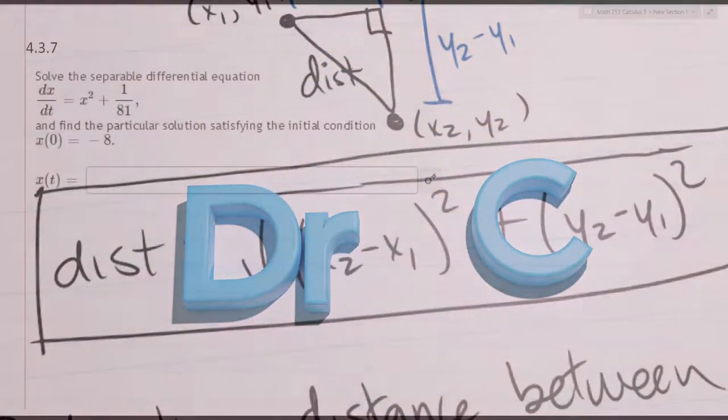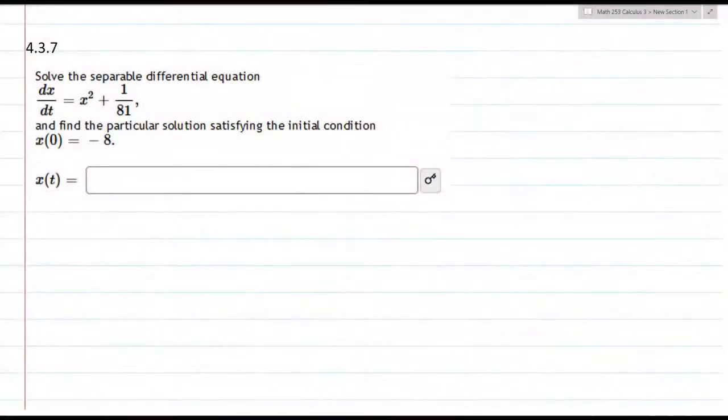So we have to separate a separable differential equation to solve it. That's the first thing I'm going to do. I can already tell that x and t are the two variables here.